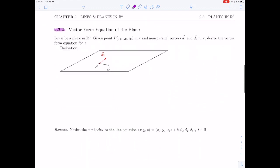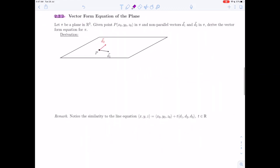The vector form equation of the plane: let π be a plane in R3, and we are given a point P(x0, y0, z0) in π, and two non-parallel vectors d1 and d2 in π. We are asked to derive the vector form equation for the plane. We're going to start out the same way as the previous derivation. Let q(x, y, z) be any point in the plane. Let me draw it here. Let's put q over here.